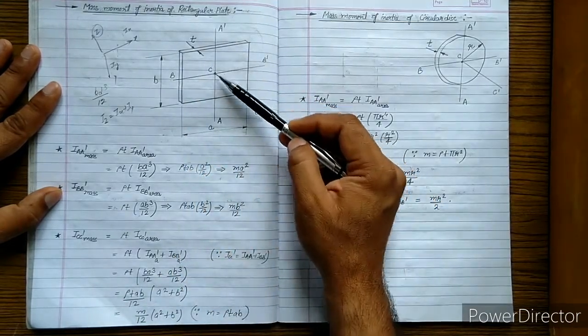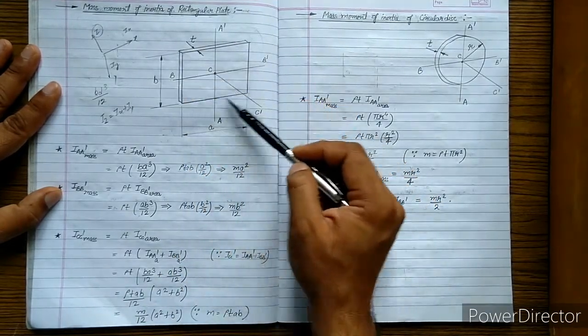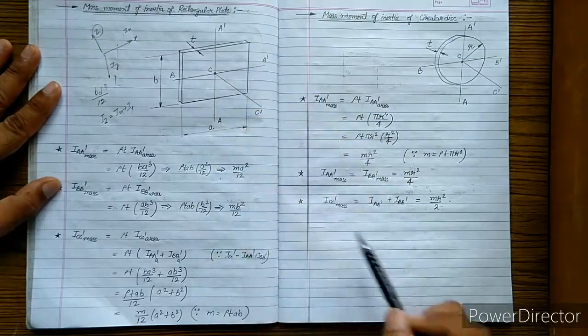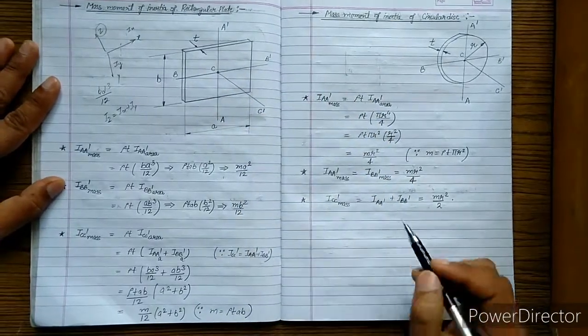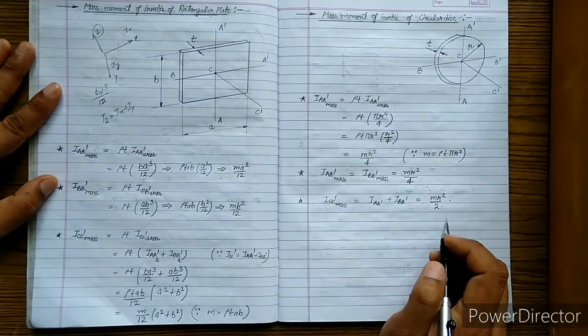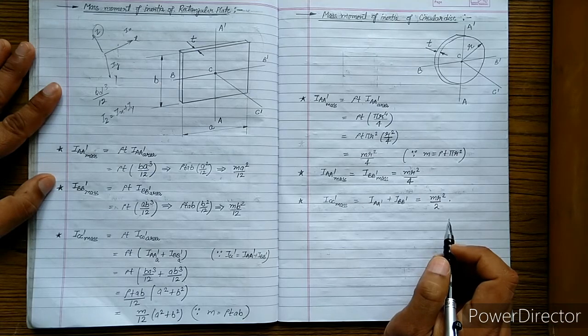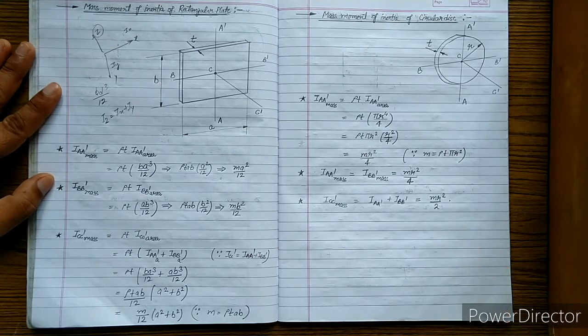This is the final answer for the mass moment of inertia of this rectangular plate about the axis perpendicular to its plane. I hope this topic is clear to you. Thank you very much.